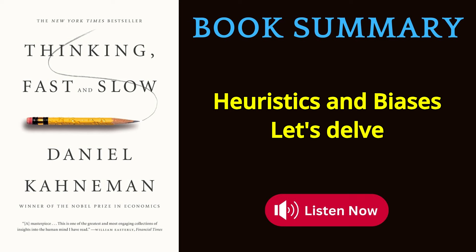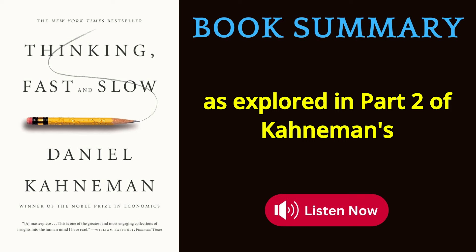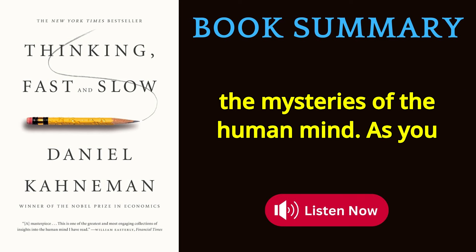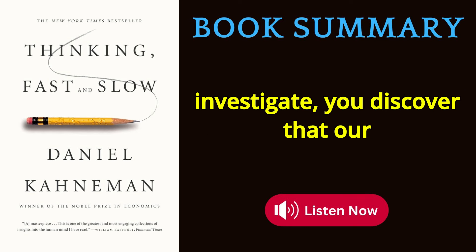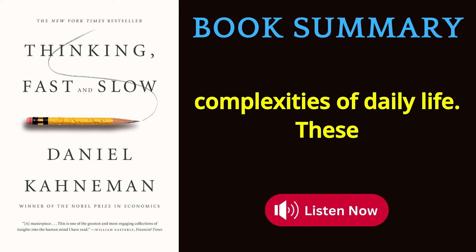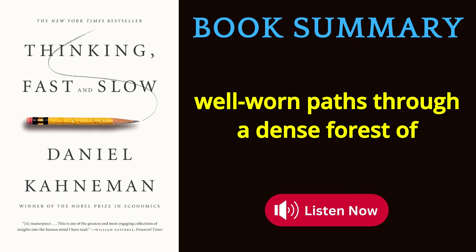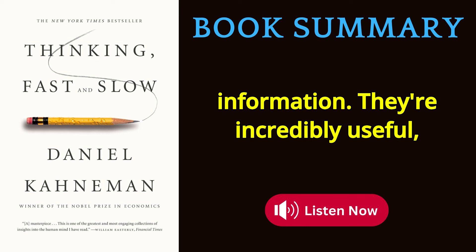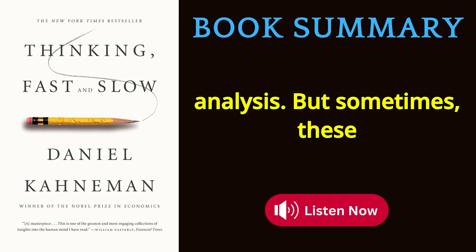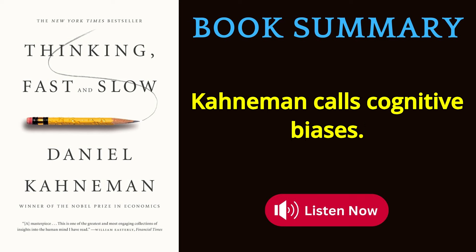Part 2: Heuristics and Biases. Our brains, brilliant as they are, often rely on mental shortcuts to navigate the complexities of daily life. These shortcuts — heuristics — are like well-worn paths through a dense forest of information. They're incredibly useful, allowing us to make quick decisions without getting bogged down in endless analysis. But sometimes these shortcuts can lead us astray, resulting in systematic errors in judgment that Kahneman calls cognitive biases.